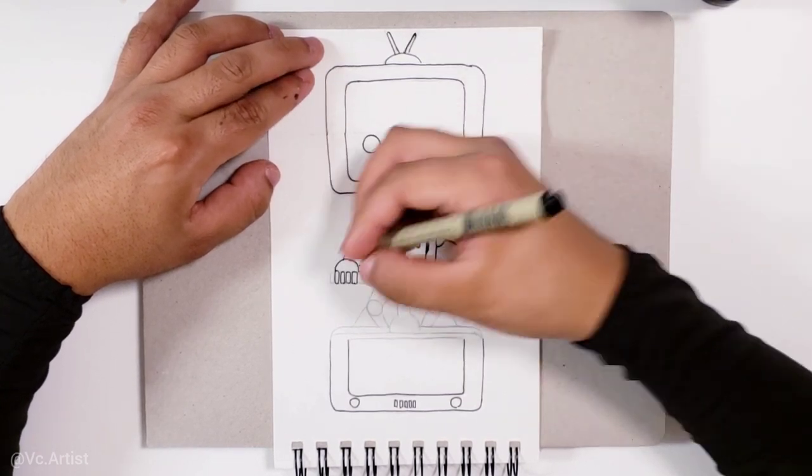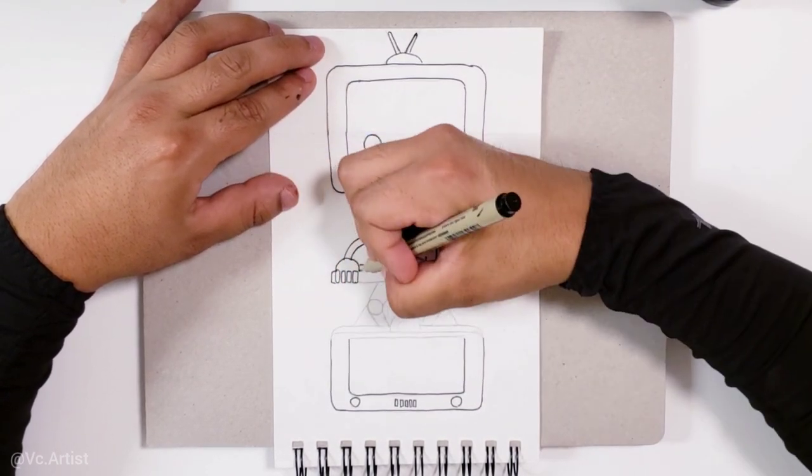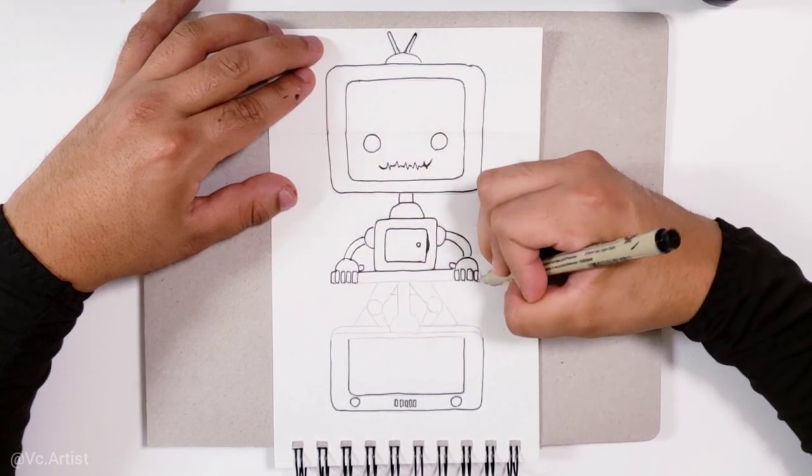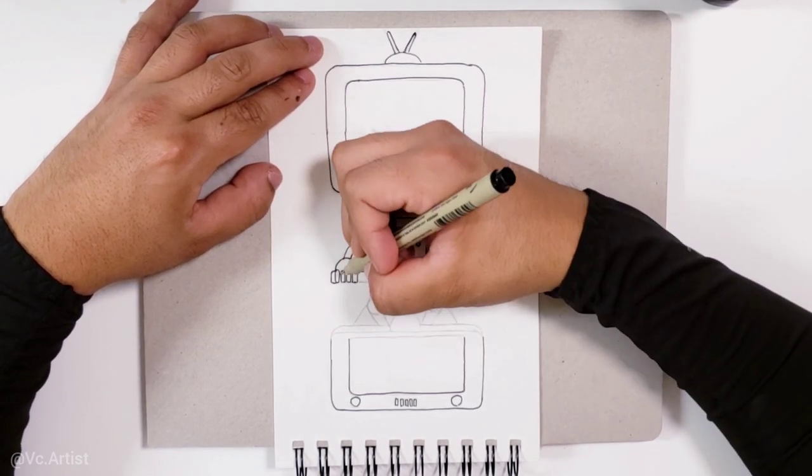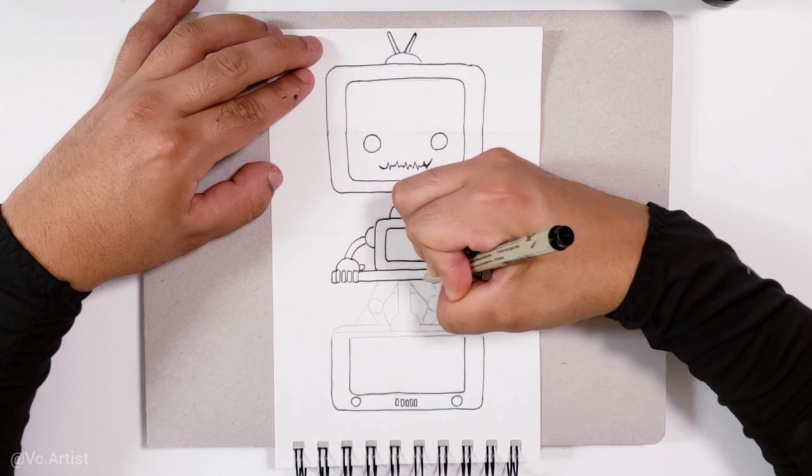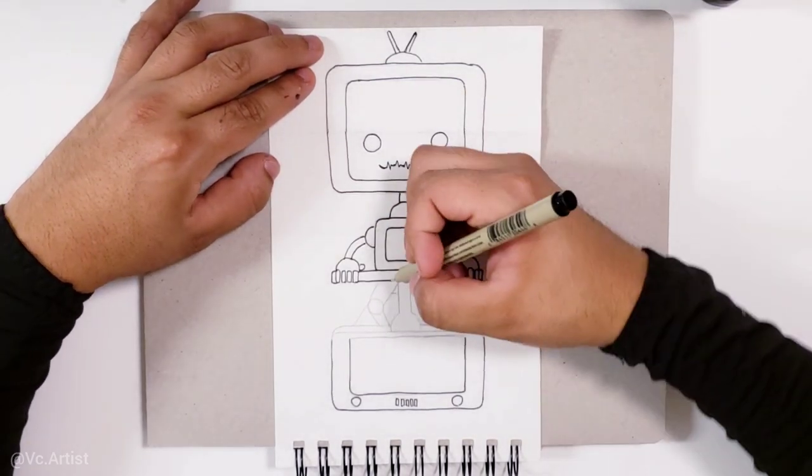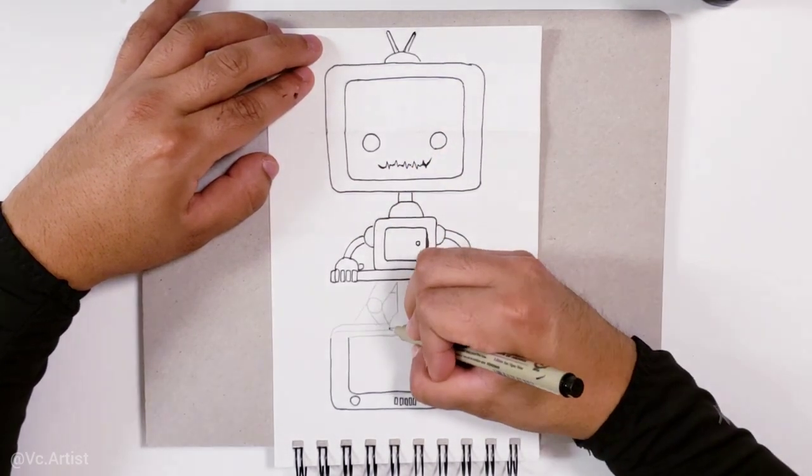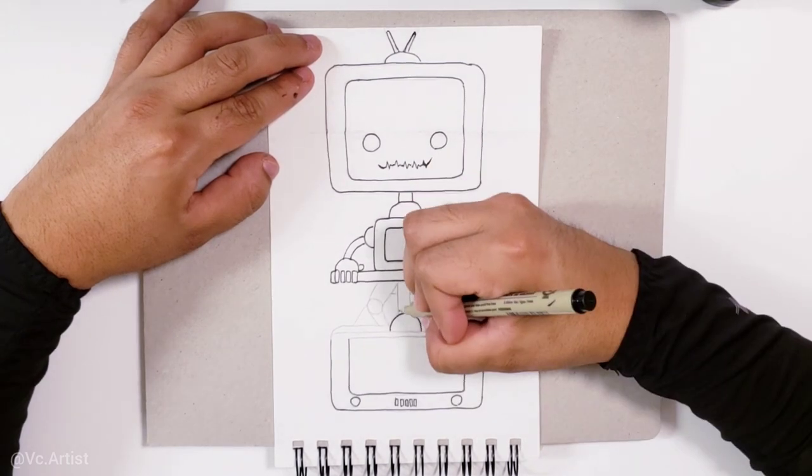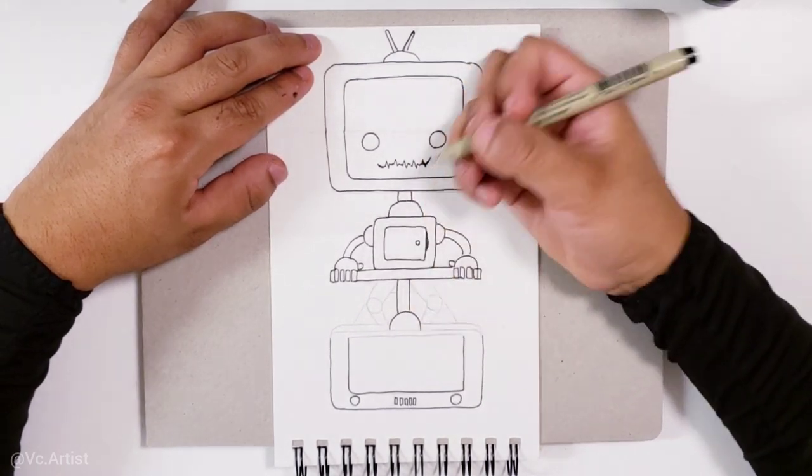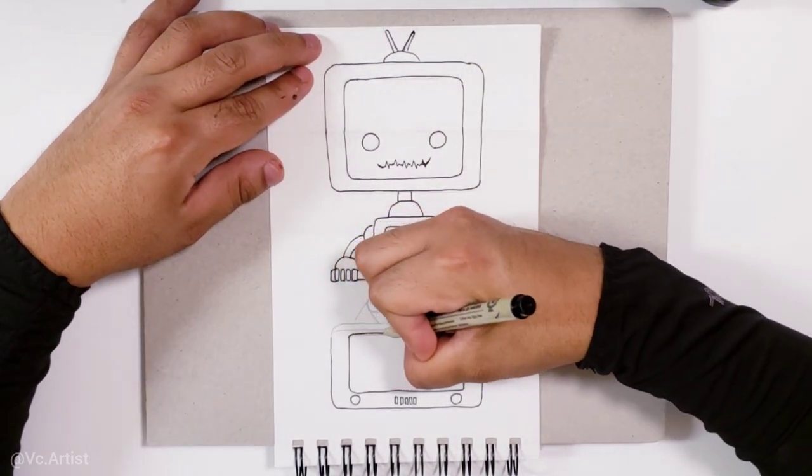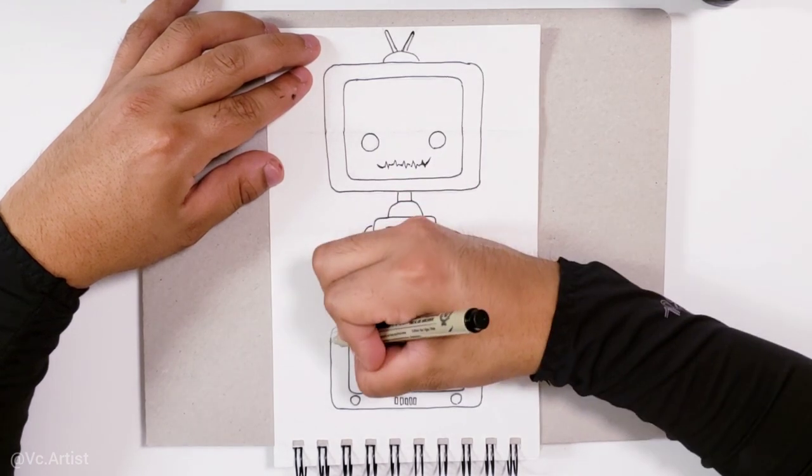And the next part is going to be the handle of the flying scooter, and this is very simple to draw. Basically, all you gotta draw is a straight line like this, and we're gonna draw the bottom part, which is what connects the handle, or the wheel, I think you can call it the wheel, and the rest of the scooter.